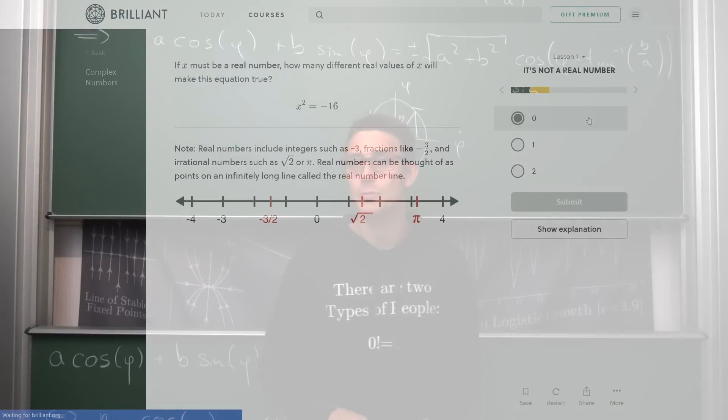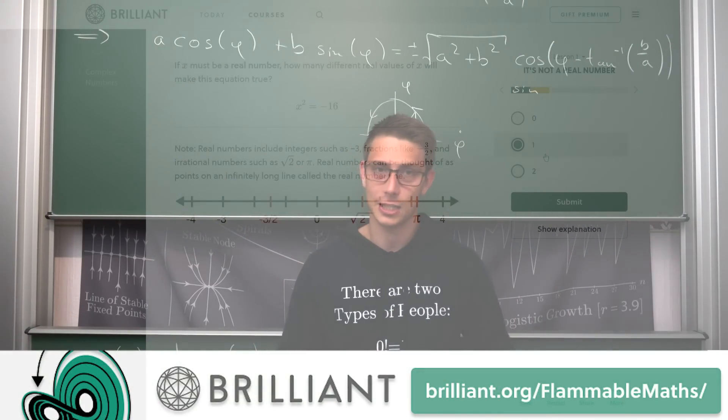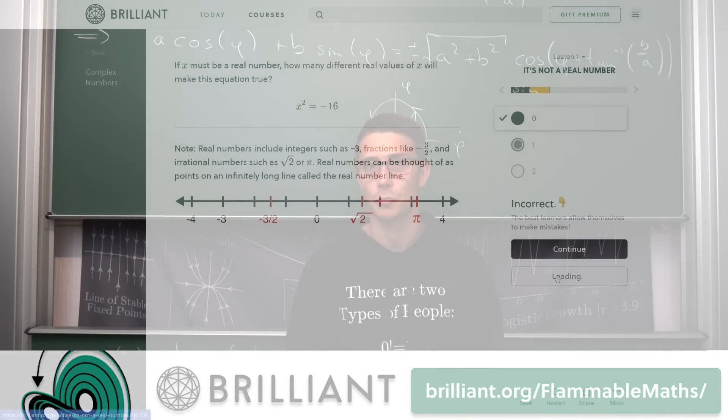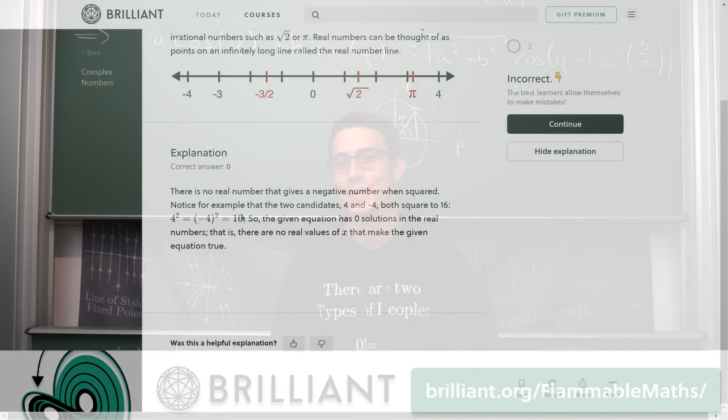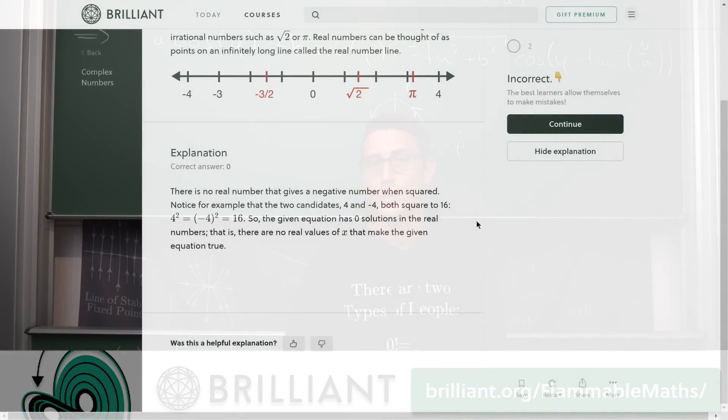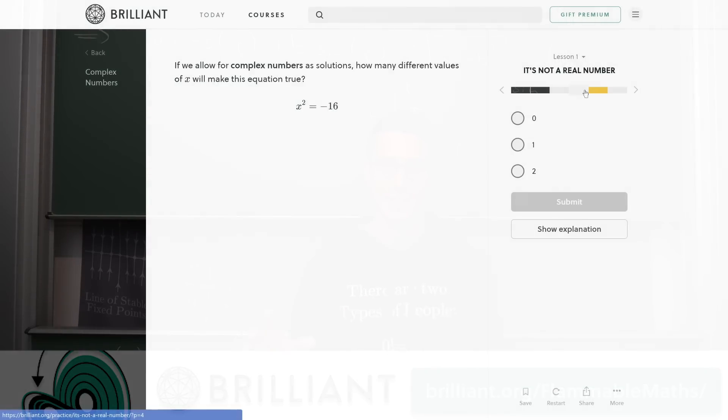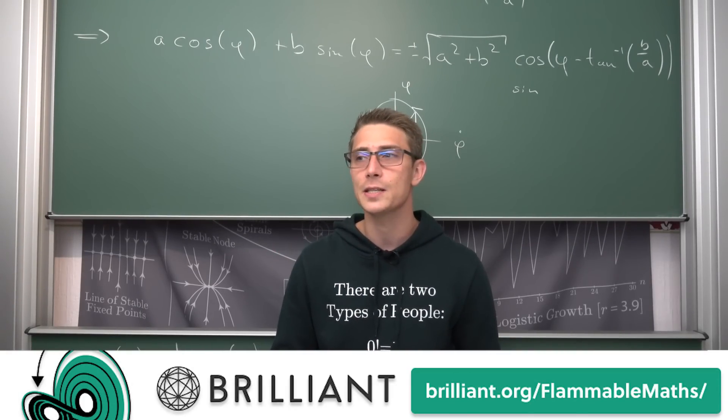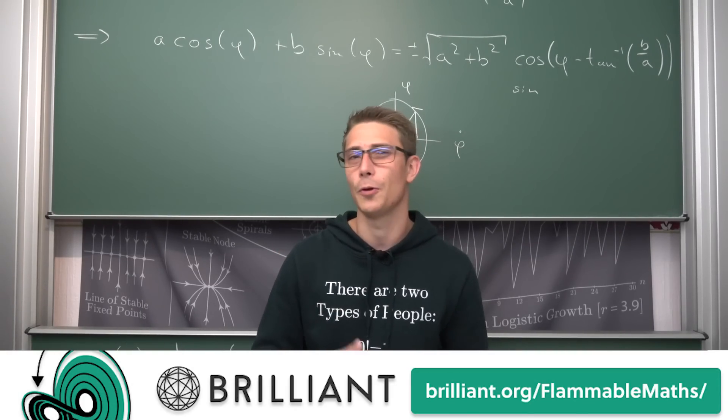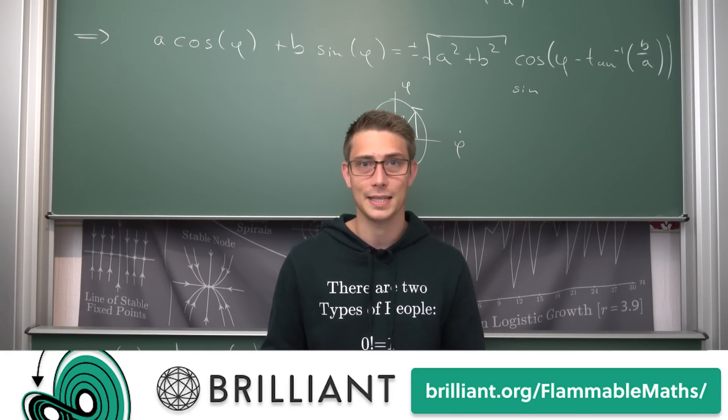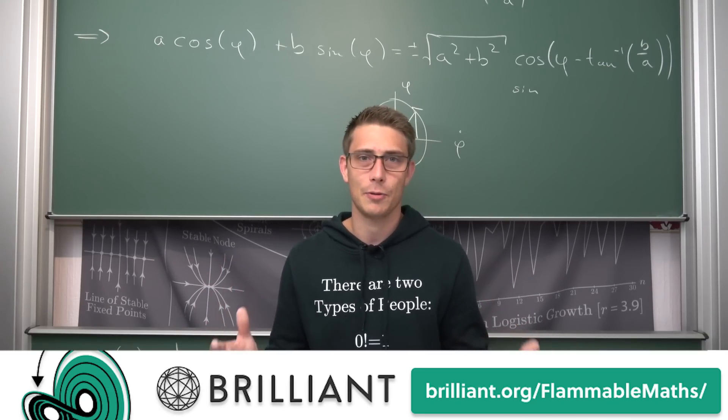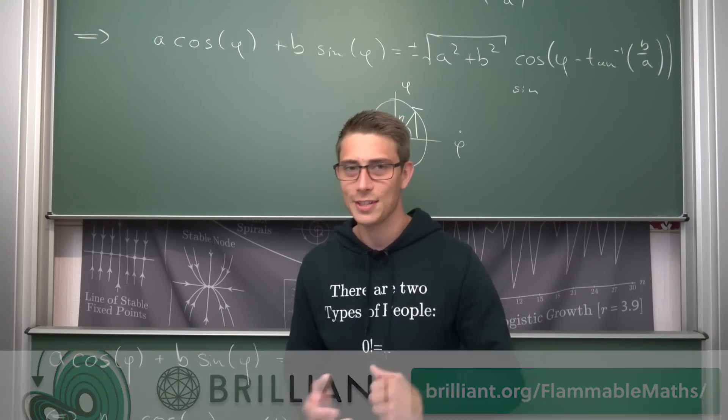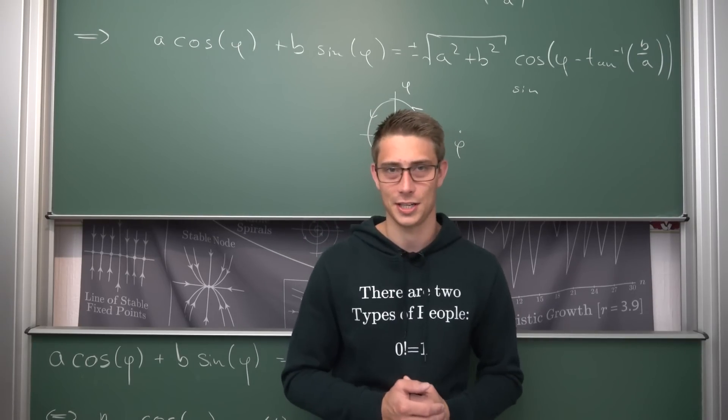And if this feels like something for you, definitely make sure to check out the link at the top of the description, brilliant.org/flammablemaps to get free access to a big portion of Brilliant already. But more importantly, the first 200 people to actually make use of the link get 20% off an annual Brilliant subscription, which is a great deal considering how much new content they are adding on their website on a regular basis. And they brush up on all the courses to make them even better than they already were. And it's such a good experience. I really love using Brilliant and I'm so glad that they are a sponsor of this channel. So definitely make sure to check it out and support the channel this way.